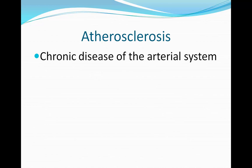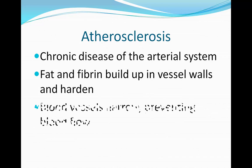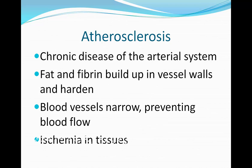Atherosclerosis is a chronic disease of the arterial system. It occurs when fat and fibrin build up in vessel walls and harden over time. The fat and fibrin build up and narrow the blood vessels, preventing blood flow, which results in ischemia in the tissues. It is important to understand atherosclerosis because when we understand the progression, we can know how to prevent, diagnose, and treat the disorder.